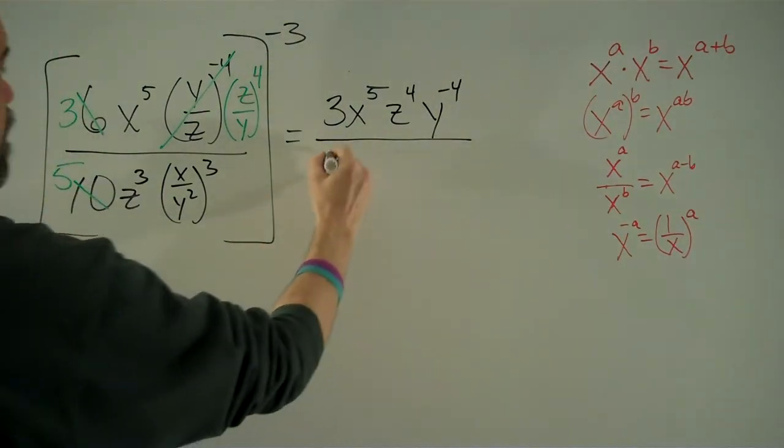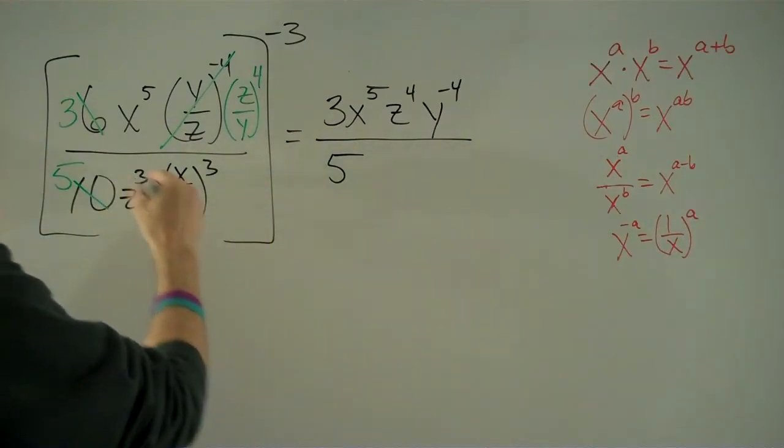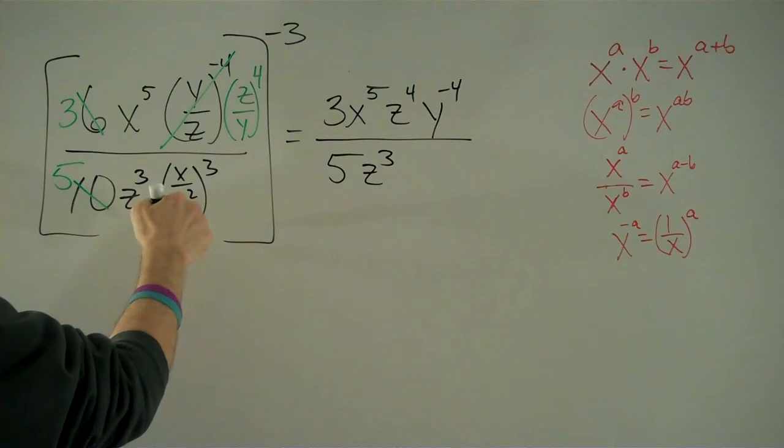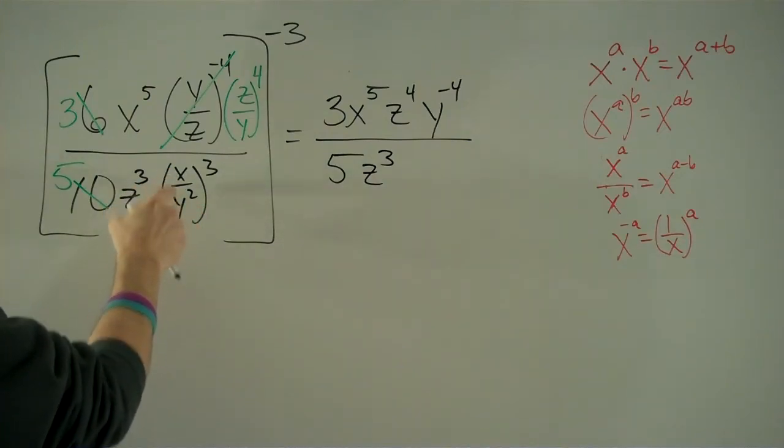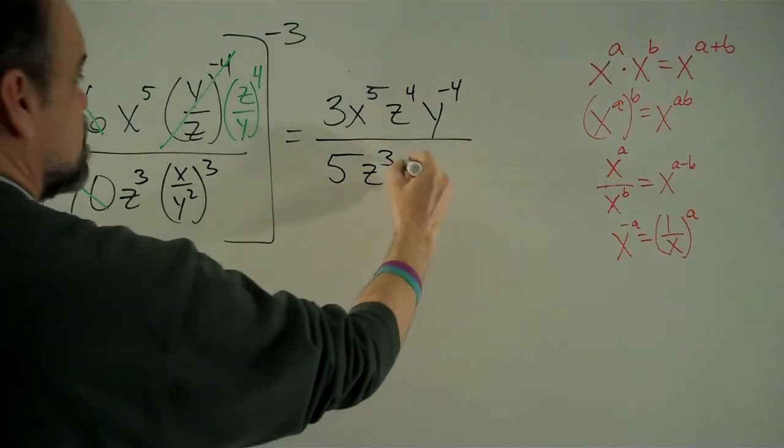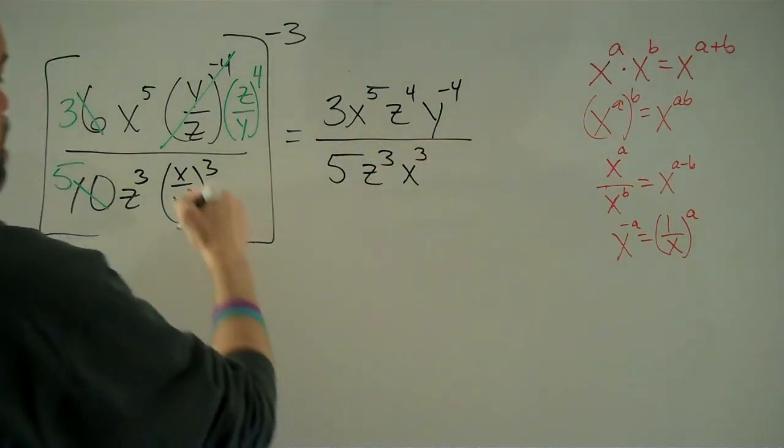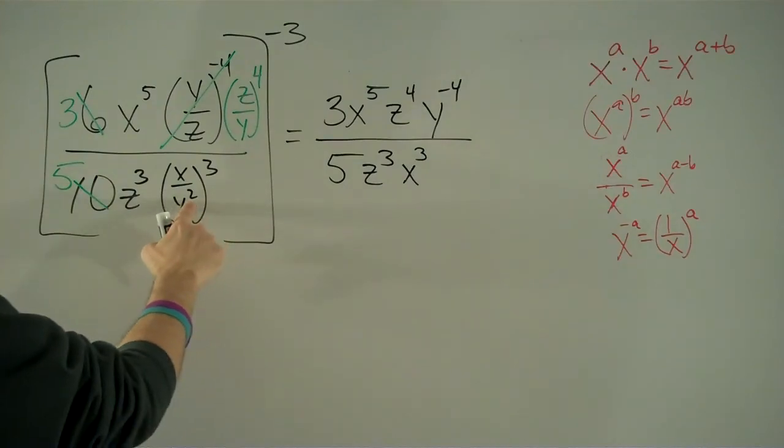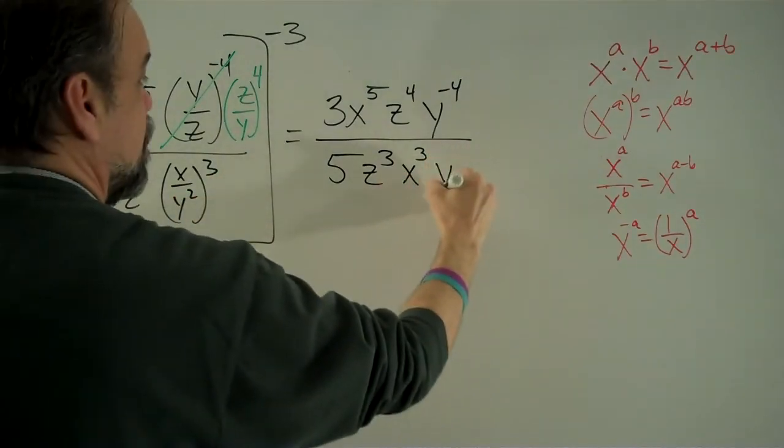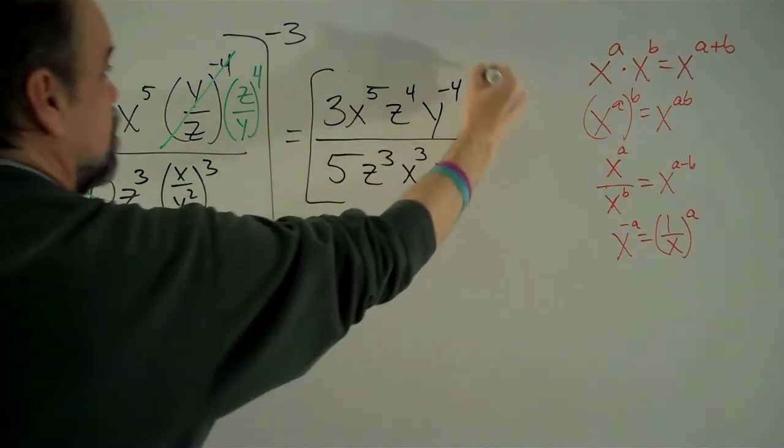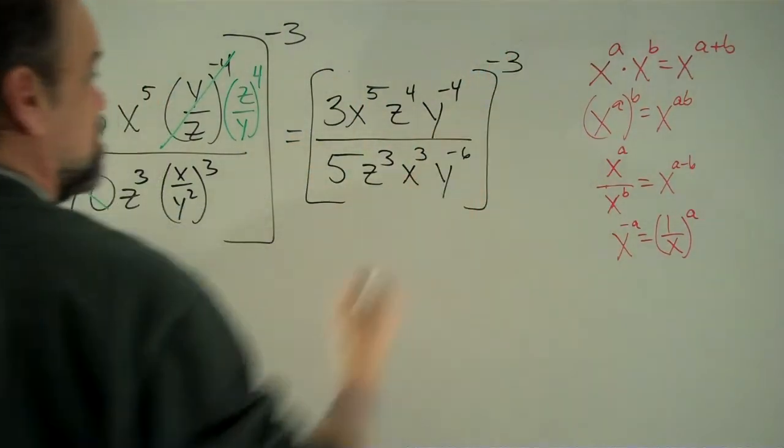And here we have 5 times z cubed times, and let's do the same thing here. Let's break this up and call this x times 1 over y squared cubed. And so that's going to be x cubed times y to the negative 2 to the third. And that's y to the negative 6. And this whole thing is still to the negative third power.